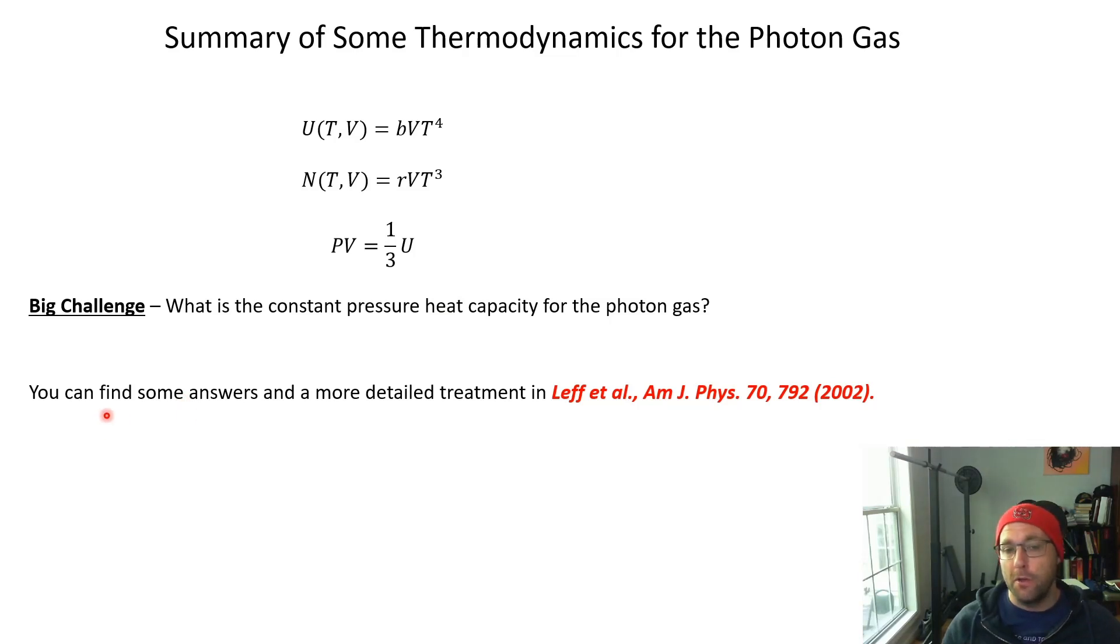If you like the topic of the photon gas you can take a look at this paper by Leff et al., Am J. Phys. 70, 792 (2002). It derives these results and I use their notation for B and R. Next time we're going to move away from the photon gas to the next section of Schroeder, which talks about how to derive analogous results for sound waves in a solid instead of electromagnetic waves in a solid. We'll see you next time.